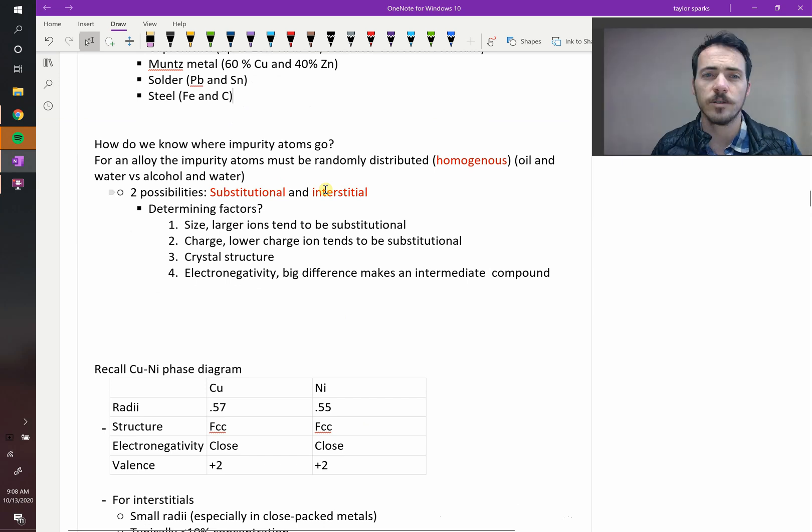You've got substitutional and interstitial possibilities for where the atoms can go. So, what are the determining factors? Well, size, charge, crystal structure, and electronegativity are all really important ones.